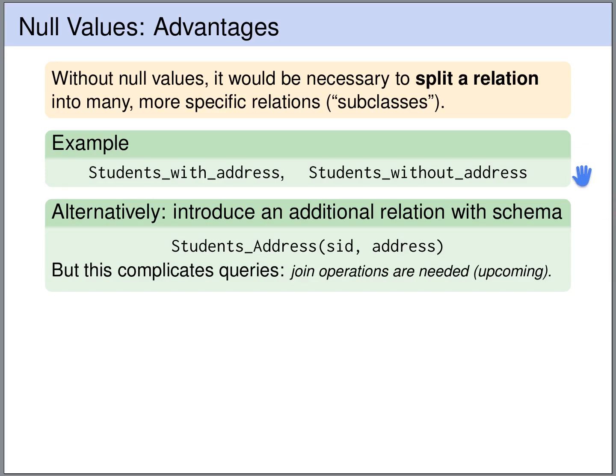Alternatively, what we can do is we can take the address column out of the students table and we can create a separate table, student's address, that links the students to their address. But in both approaches, we will need more tables and we will need additional join operations in order to query all these tables.